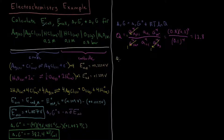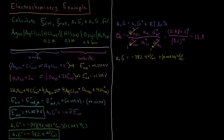So our ΔrG = ΔrG° + RT ln Q = −382.4 kJ/mol + (0.008314 kJ/mol·K)(298 K) ln(12.8).